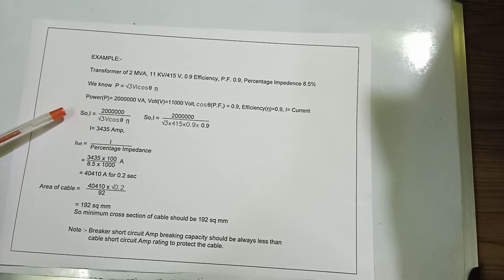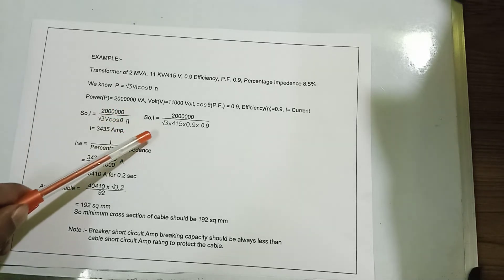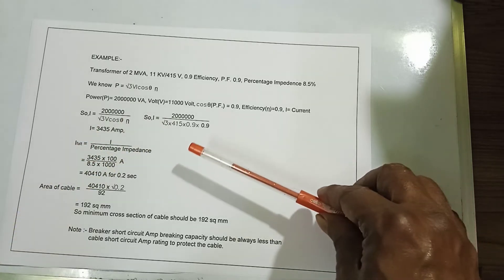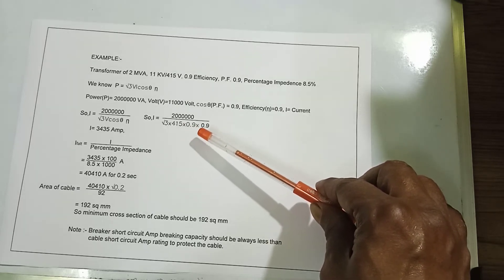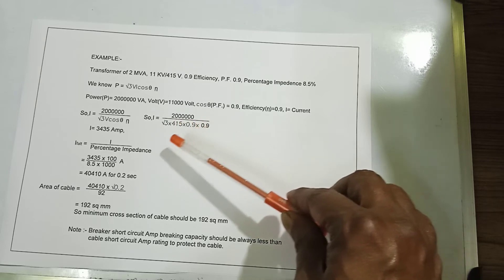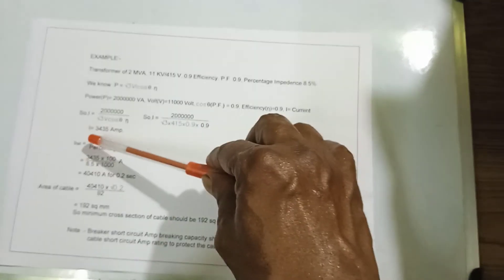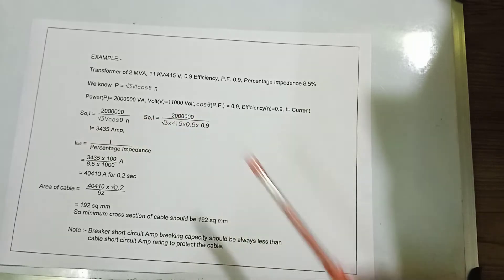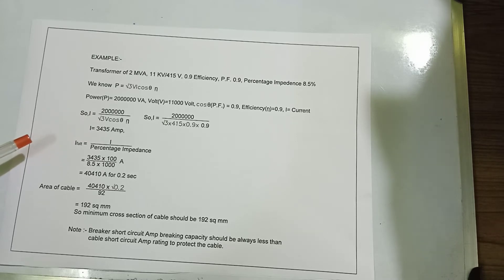Current I = 2 MVA divided by (√3 × 415 × 0.9 × 0.9), giving I = 3435 amperes.